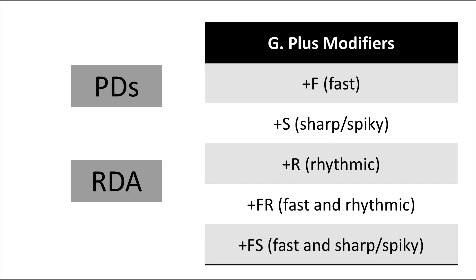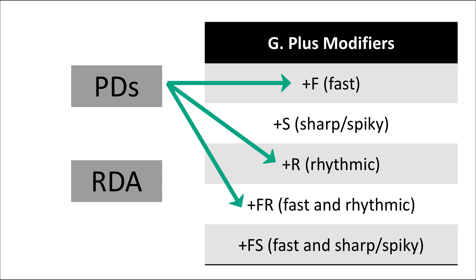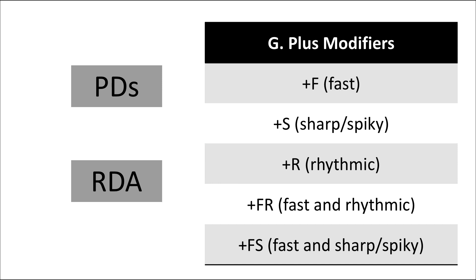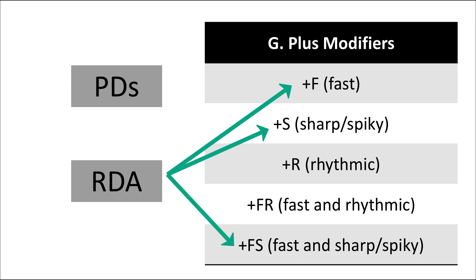The plus modifiers can be particularly challenging. Only periodic discharges and rhythmic delta activity can have plus modifiers, and these indicate additional elements to the primary pattern. Periodic discharges can have superimposed fast activity, superimposed rhythmic activity, or a combination. Periodic discharges cannot have the addition of sharp or spiky components since that is already included in their primary morphology. Rhythmic delta activity can have fast activity, sharp or spiky activity, or a combination, but cannot have rhythmic activity since rhythmicity is already part of its main descriptor.